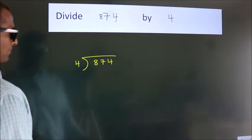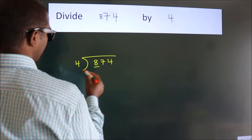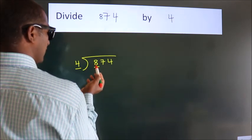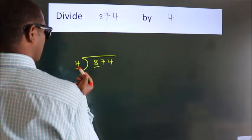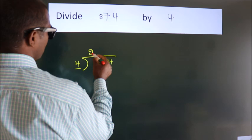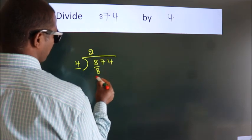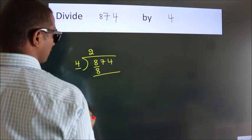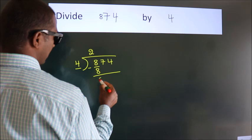Next, here we have 8, here 4. When do we get 8 in the 4 table? 4 times 2 is 8. Now we should subtract. We get 0.